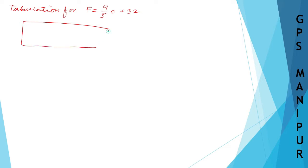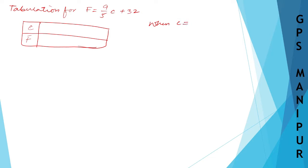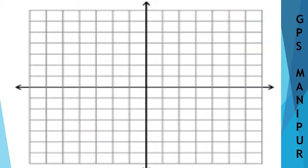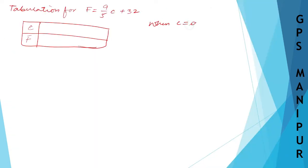Here is the table — one column for Celsius and one for Fahrenheit. From the question, we'll take the values: 40°C, 113°F, and 0°C. First, when C = 0: F = 9/5 × 0 + 32.